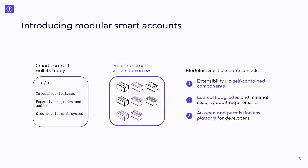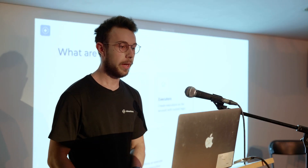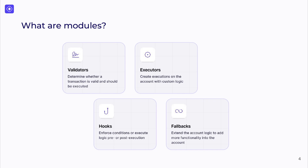Either a developer or a user could say, I want this feature in my account, I want that feature — add them, and at a later stage just remove or swap them out. Currently we think of four types of modules, and there may be more in the future. The four types are validators, executors, hooks, and fallbacks.